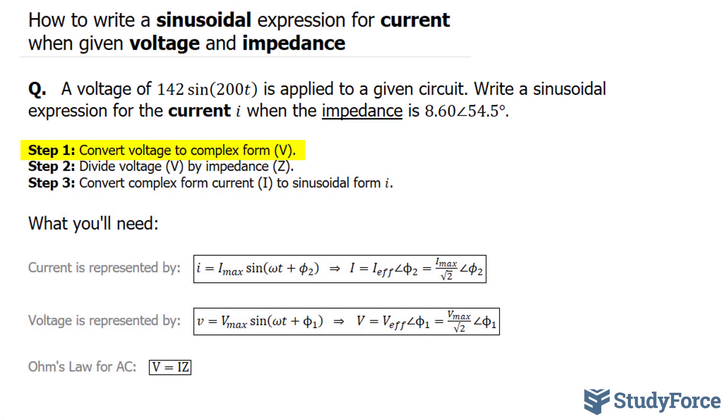The first step is to convert voltage to complex form. Let's convert this sinusoidal function into complex form by using the amplitude of 142 as V_max for polar form. Our V_max is 142, and I'll take this number and divide it by the square root of 2.